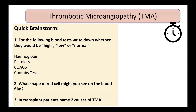Now a quick activity on TMA: jot down whether these blood tests would be high, low, or normal in TMA; what shape of red cell you'd look for on the blood film; and the two main causes of TMA in a transplant patient. You have 30 seconds.